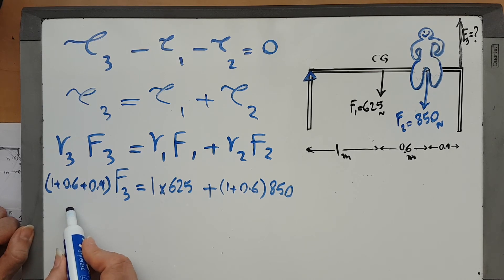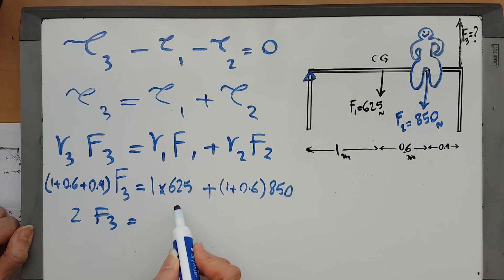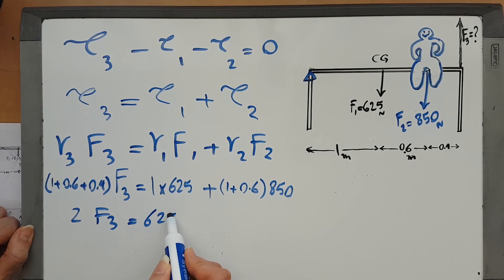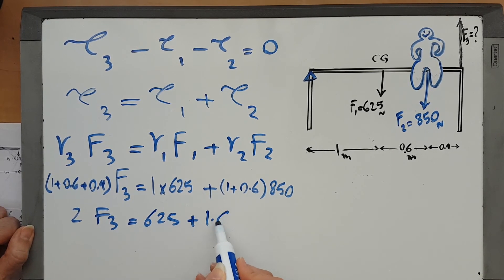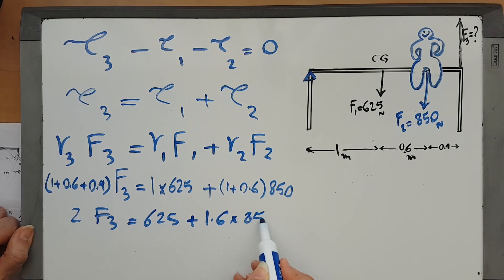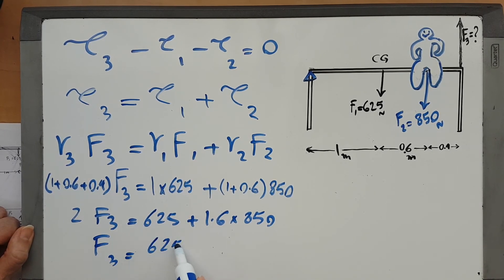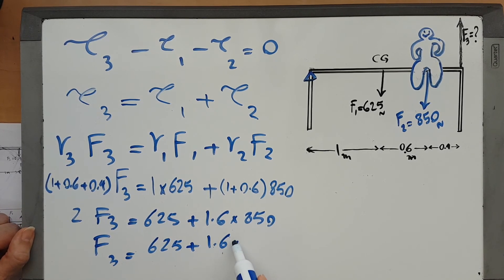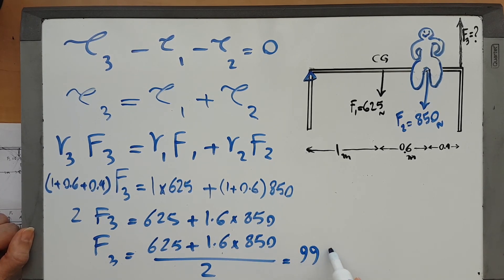2 F3 equals 625 plus 1.6 times 850, and F3 would be 625 plus this number divided by 2, and the answer would be 992.5.